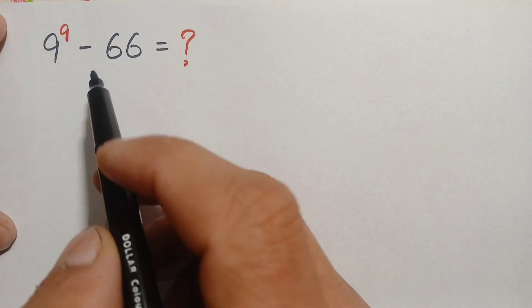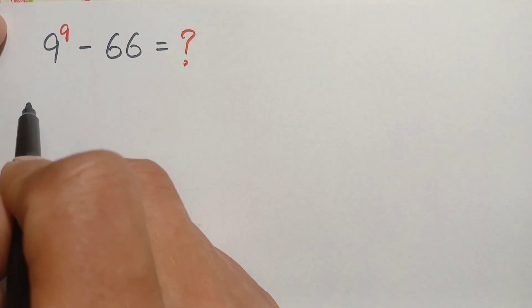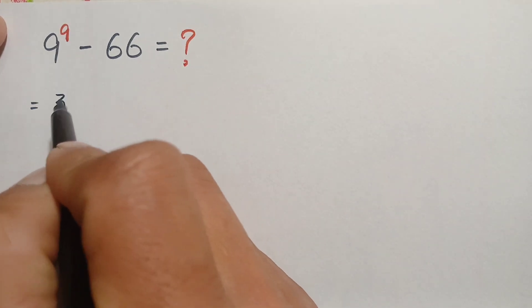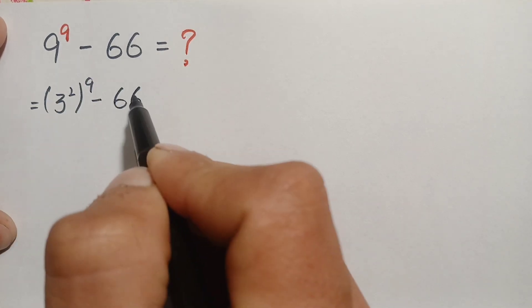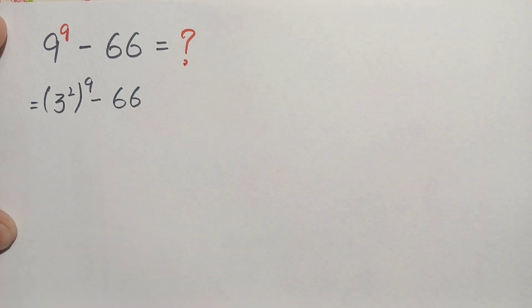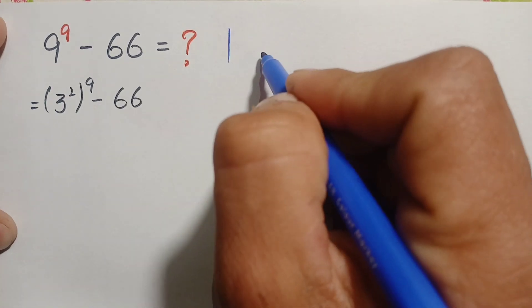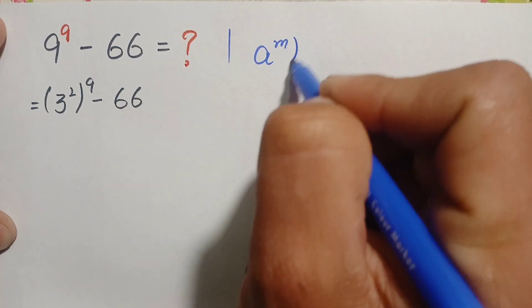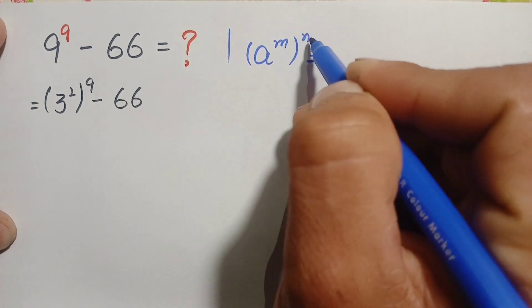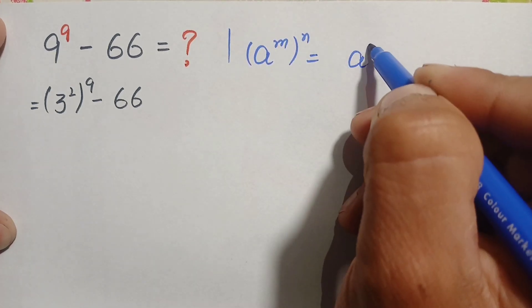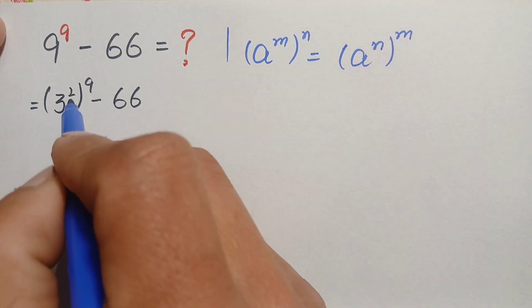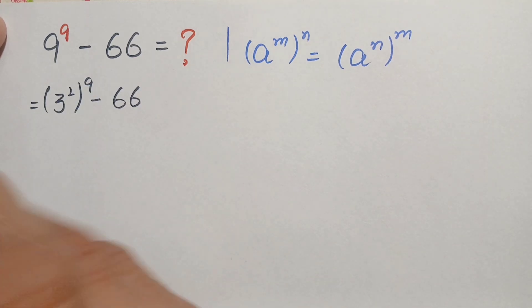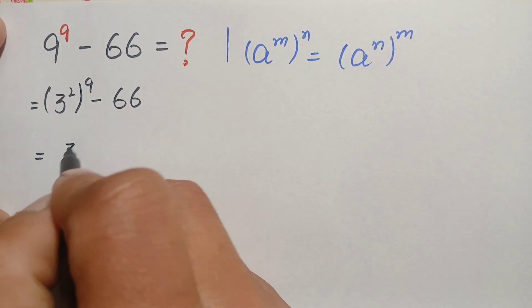So how can we solve this math problem? First of all, we can write the number 9 as 3 squared, so this becomes (3²)^9 minus 66. We will use the exponential identity that a raised to power m, whole raised to power n, can be written as a raised to power n, whole raised to power m — we can interchange the powers.